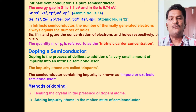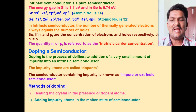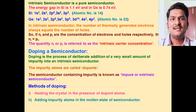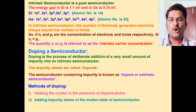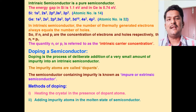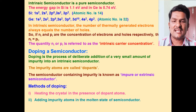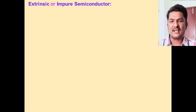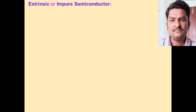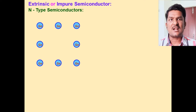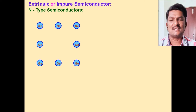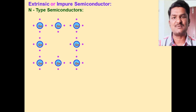When an impurity is added to a pure semiconductor, that process is called doping. There are different methods of doping: heating a crystal in the presence of dopant atoms, adding impurity in the molten state, or bombarding the semiconductor with ions. Extrinsic or impure semiconductors are of two types: N-type semiconductor and P-type semiconductor.